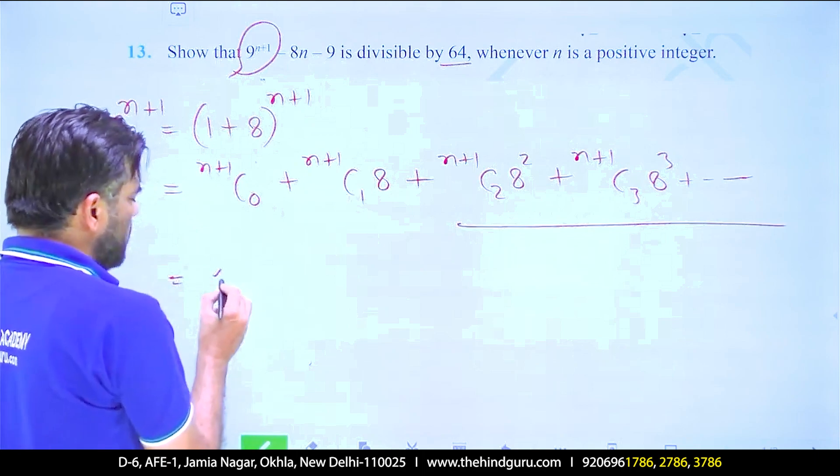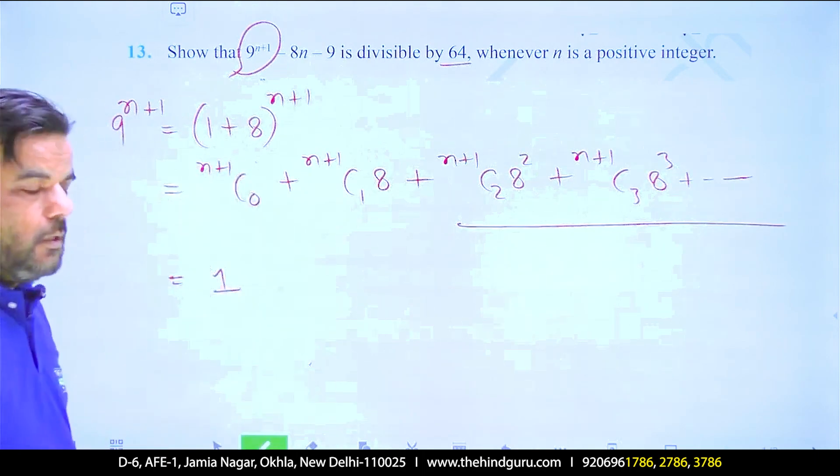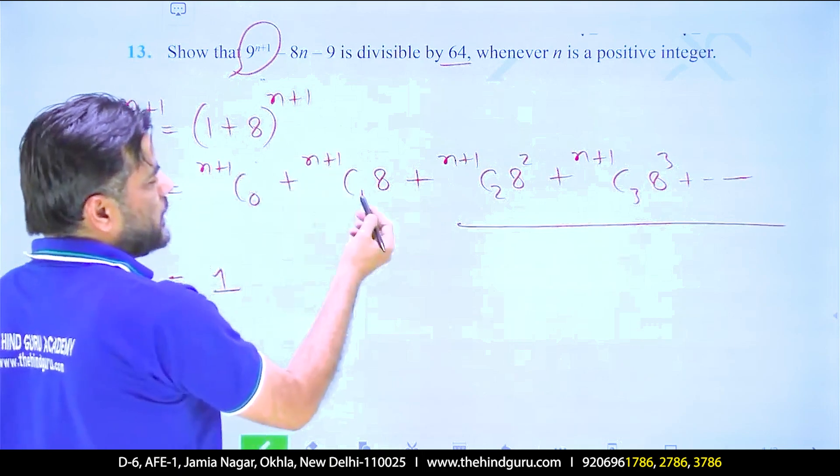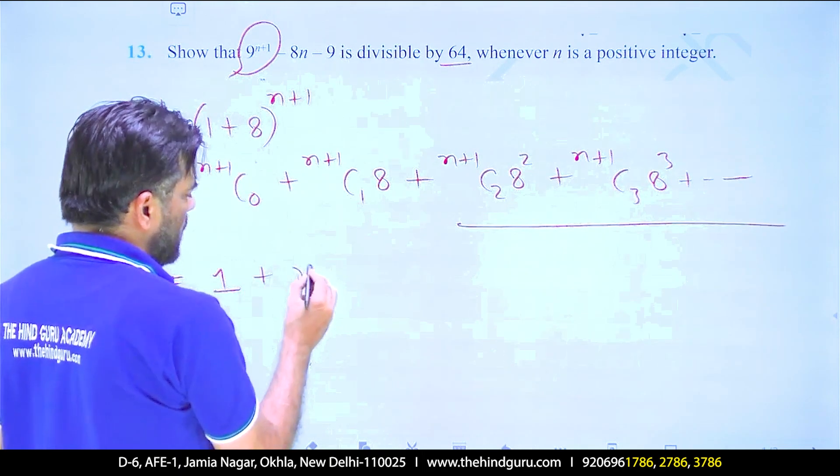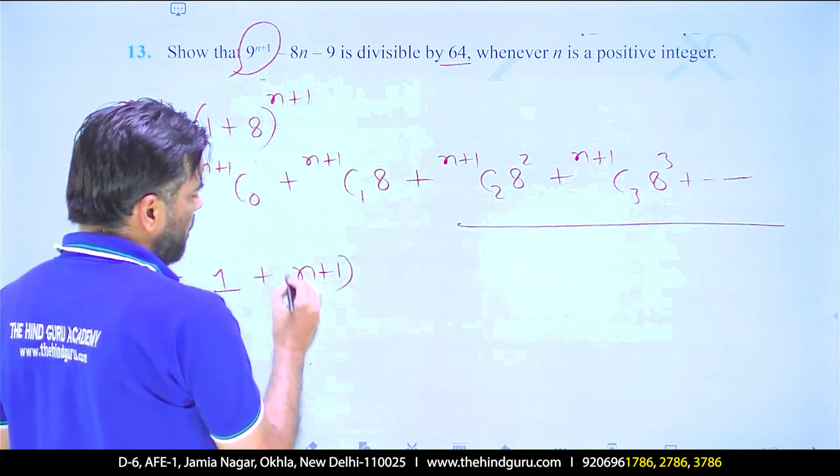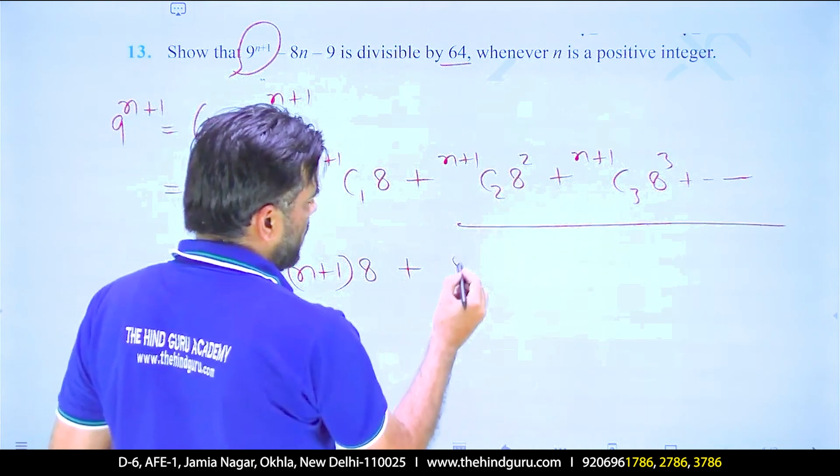n choose 0 will always be 1, whatever n is. Then you have n choose 1 times n, here n plus 1 times 8, here you have 8 squared common.